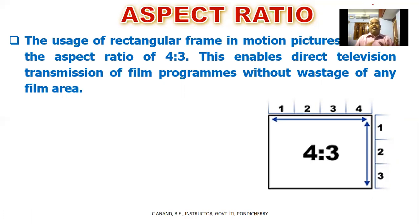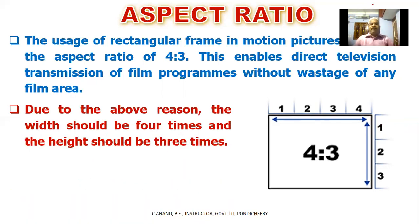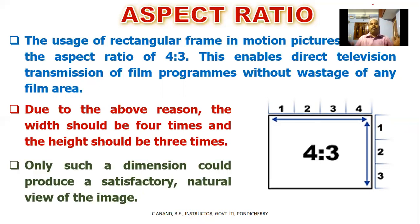We use a 35mm cinema scope screen with the 4:3 aspect ratio. This enables direct television transmission of film programs without wastage of any film area. Due to these reasons, the width should be 4 times and height should be 3 times, as only such dimensions produce a satisfactory natural view of the image.